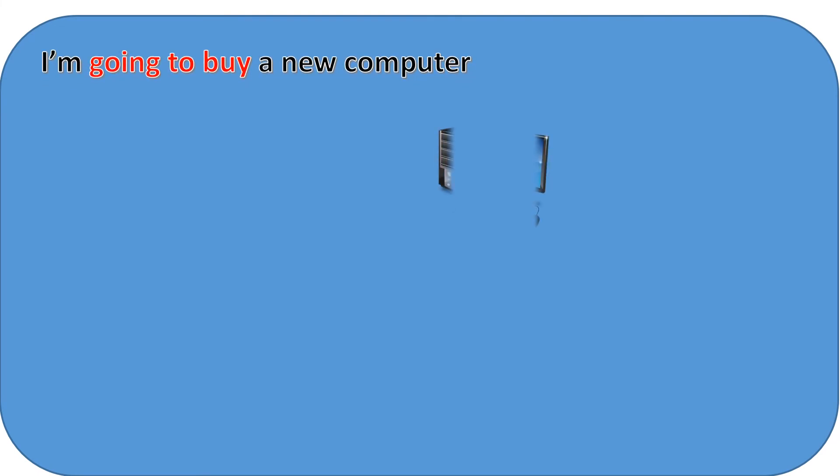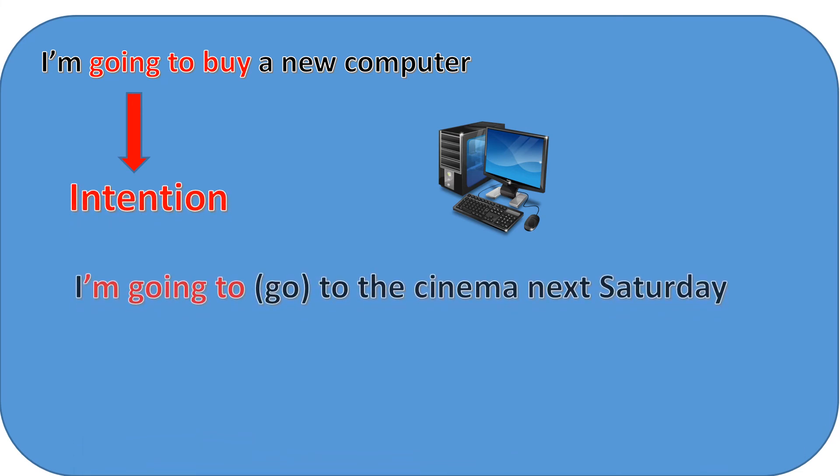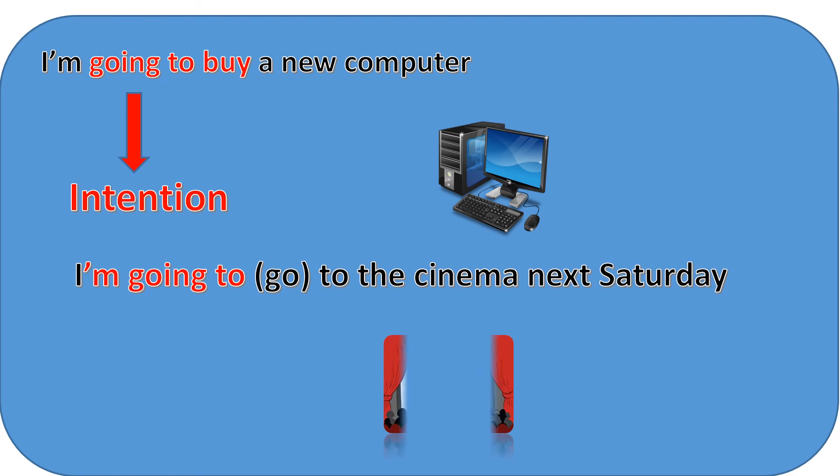Now let's have a look at these examples. For example, I'm going to buy a new computer. The speaker is expressing his intention to buy a new computer. I'm going to the cinema next Saturday. The speaker is talking about his plan to go to the cinema next Saturday. So we use future going to to express intentions and plans or arrangements.